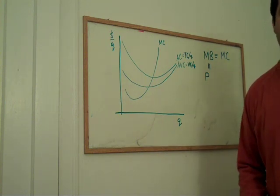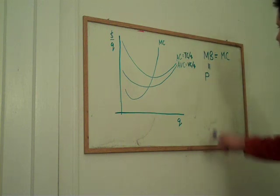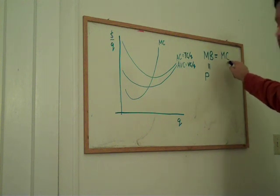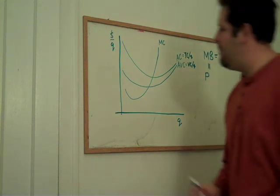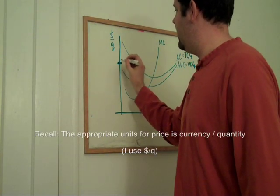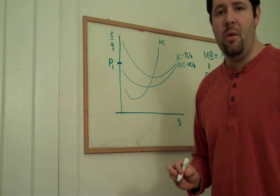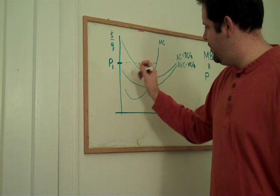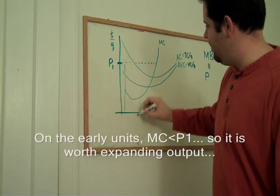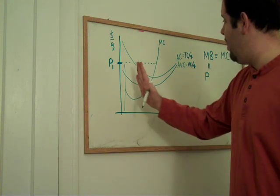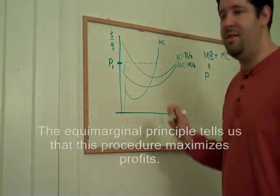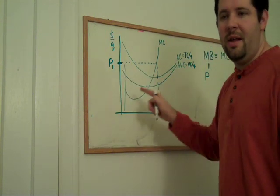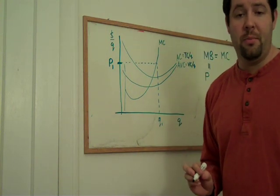So what does a price-taking firm do when it chooses its quantity? It just applies the equimarginal principle. It sets the price, which is its marginal benefit, equal to its marginal cost. If we think about the price, let's take a price like P1. What we can do for this firm is we just keep producing units—there's that first unit, second unit, third unit, fourth unit, so on and so forth, all the way over until that last unit costs just as much as the price to produce. And if that is the price, that is the quantity that this firm should provide.